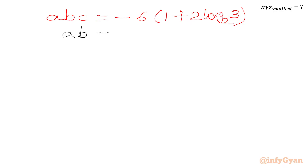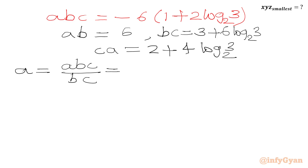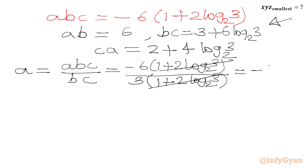To find A, we divide ABC by BC: minus 6 times (1 plus 2 log 3 base 2) divided by (3 plus 6 log 3 base 2). Taking 3 common from the denominator gives 3 times (1 plus 2 log 3 base 2), so the brackets cancel and minus 6 over 3 gives A equal to minus 2.